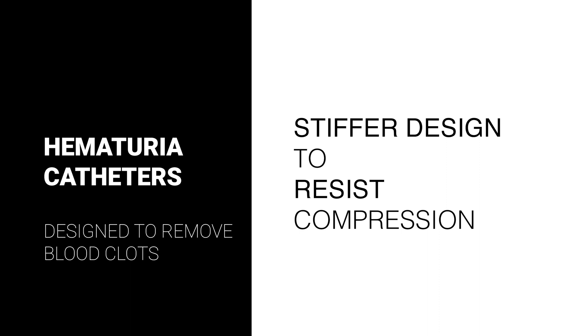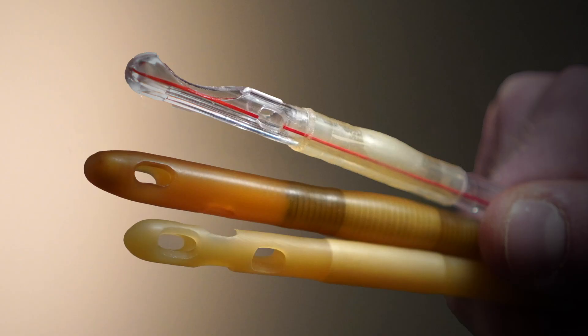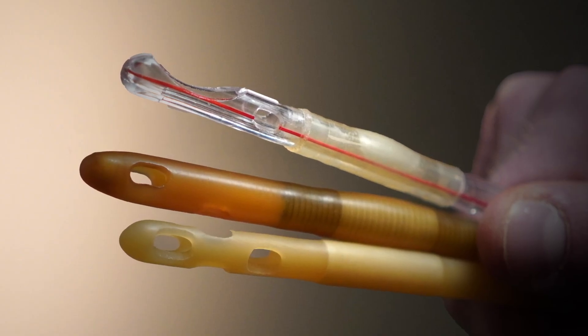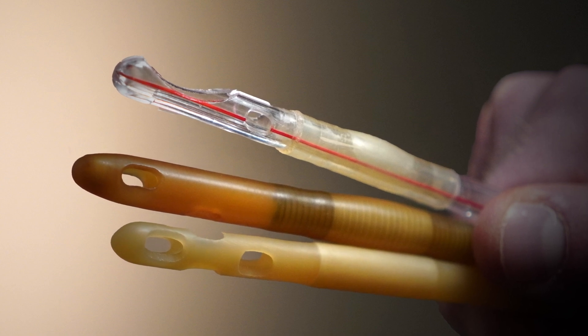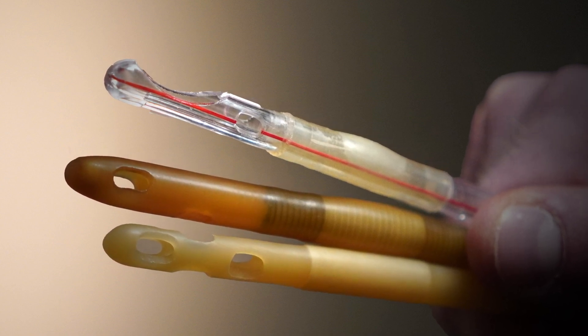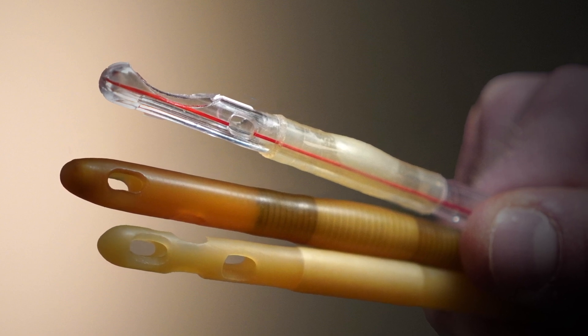So I think that's a good segue and brings us to hematuria catheters. What is a hematuria catheter? Hematuria catheters are specifically designed catheters to help manage hematuria and blood clots. They come in a two-way and three-way versions. They are generally made of stiffer material that resist compression and have an internal nylon or metal springs that help resist compression from irrigation or aspiration. When you're pulling out clots and aspirating that tube, it prevents that from collapsing down and decreasing the flow of the clots.